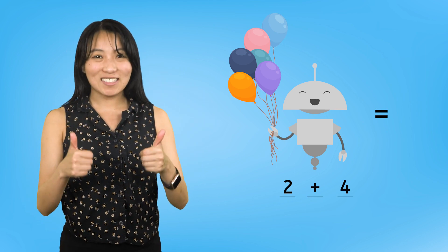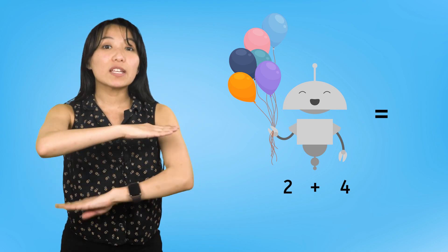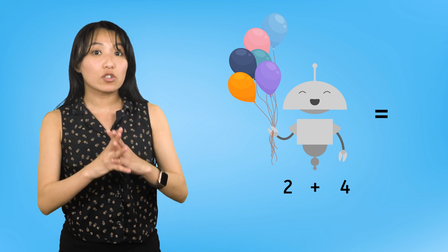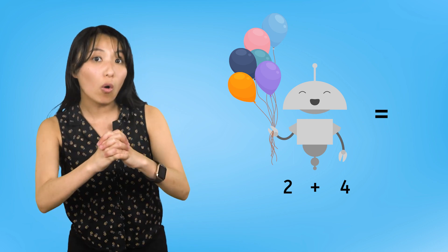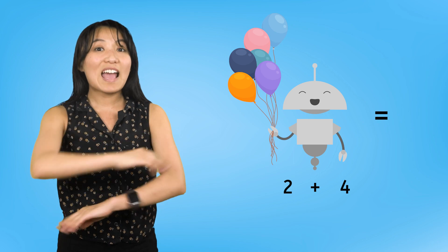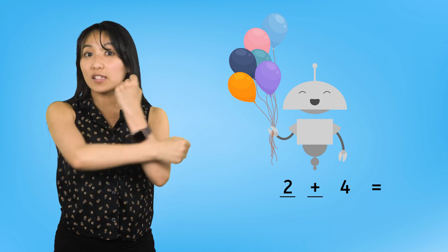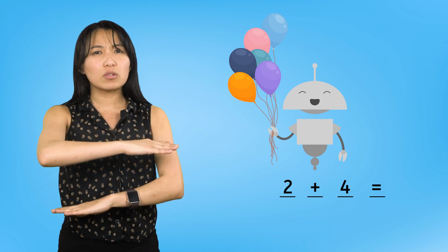Now for the equal sign. This symbol tells us what the answer, or the whole, is. We need to put the equal sign after our two parts. Now our number sentence says two plus four equals... what? We need to find the whole!